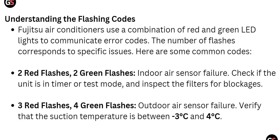For the indoor air sensor failure code, check if the unit is in timer or test mode and inspect the filters for blockages. Another flashing code is three red flashes and four green flashes, which means outdoor air sensor failure. Make sure the outdoor air sensor is properly working.